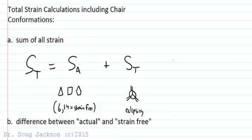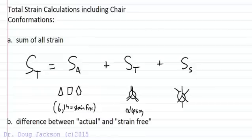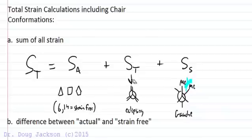We also have steric strain, which can be one of a couple of things. The first is gauche-type strain: if we have a staggered conformation of an ethane-type molecule or any linear alkane where groups such as a methyl are 60 degrees apart in dihedral angle, we have bumping between those groups — that's gauche strain. It's a long-distance interaction and a form of steric strain, distinct from torsional strain, which involves eclipsing at zero degrees dihedral angle.